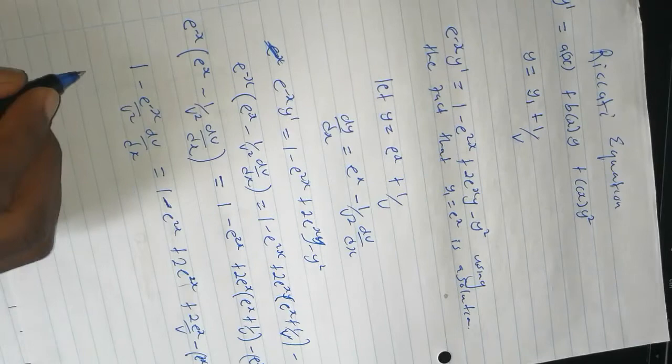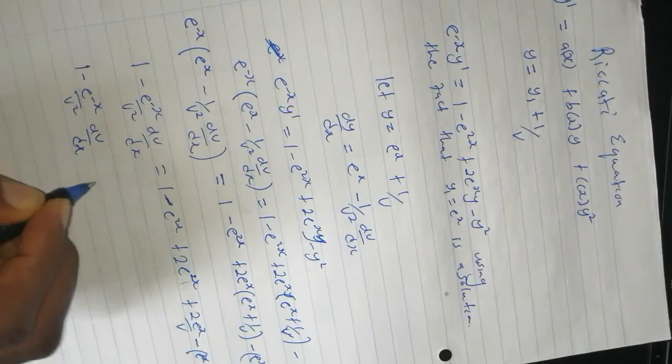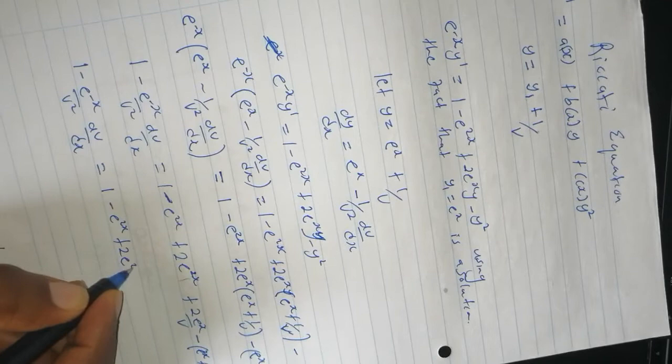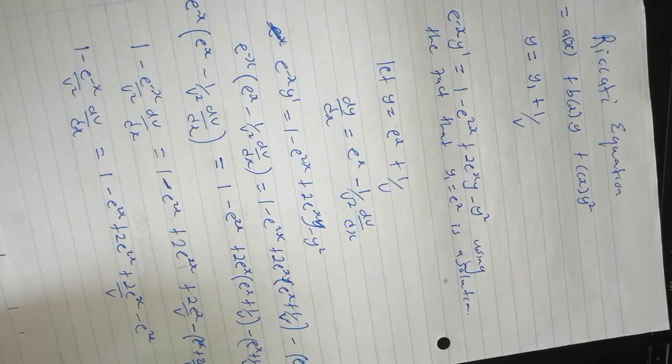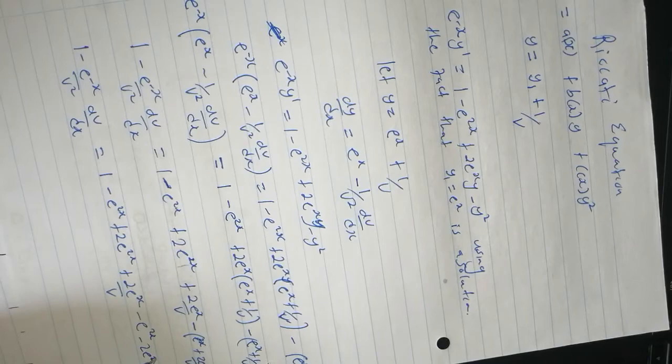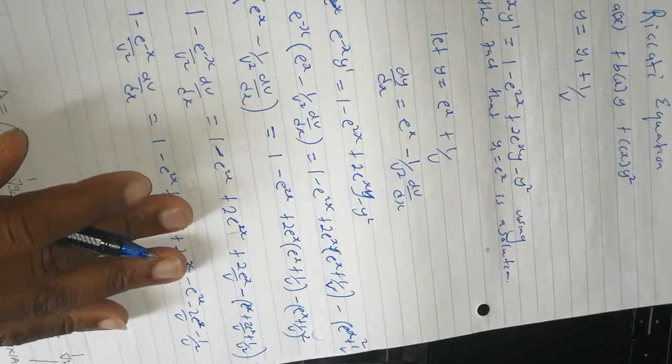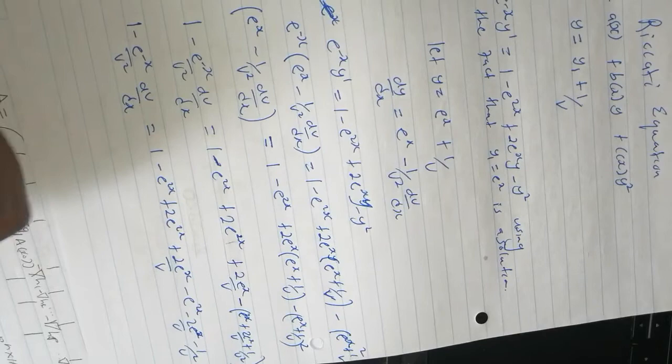This is a mess, so: 1 minus e to the power negative x over v squared dv/dx equals 1 minus e to the power 2x plus 2e to the power 2x plus 2e to the power x over v minus e to the power 2x minus 2e to the power x over v plus 1 over v squared. I will attach this PDF in the description below.